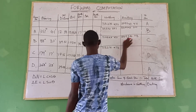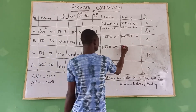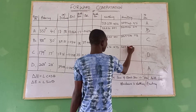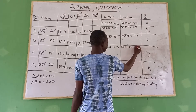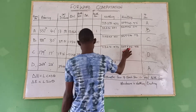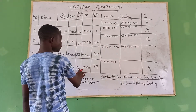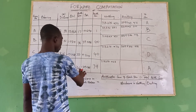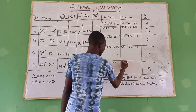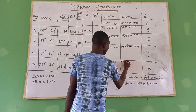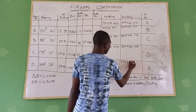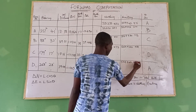This value plus this value, since it's a positive value, gives us 559,984.987. Then this value subtract from this value, since it's a negative sign, gives us 559,945.921.